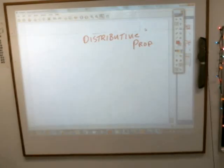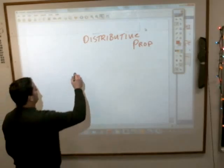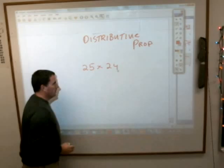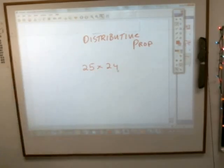Question about the distributive property. It said Juan needed to multiply 25 by 24, and it said name two ways that you can do that using the distributive property.